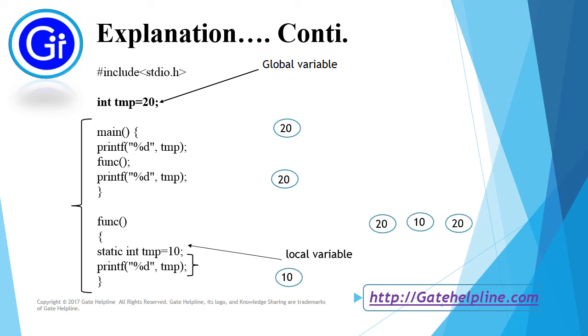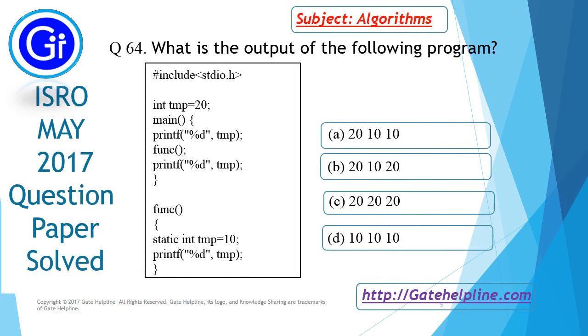So answer to our question is 20, 10 and 20 is printed. So friends as per our discussion answer to this question is option b that is 20-10-20 just because of the static scoping of the variables.